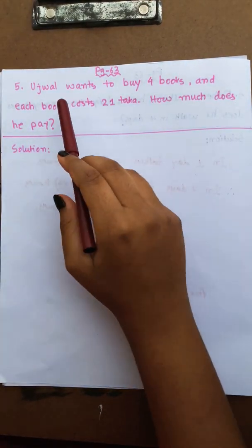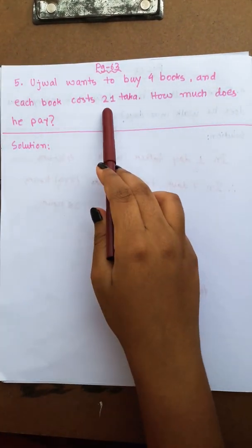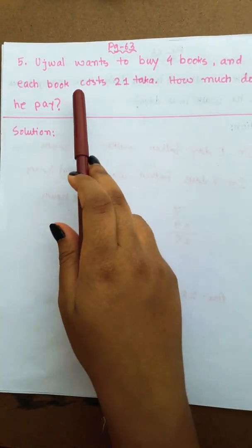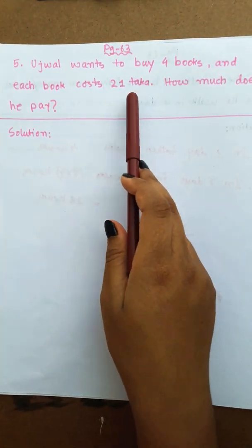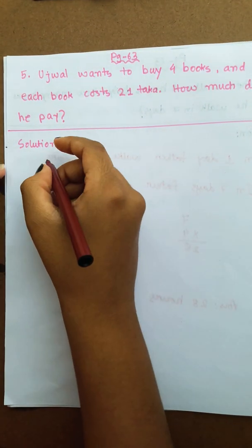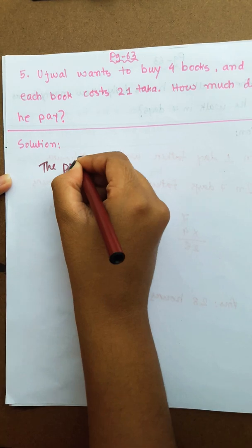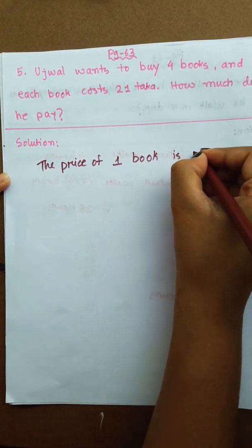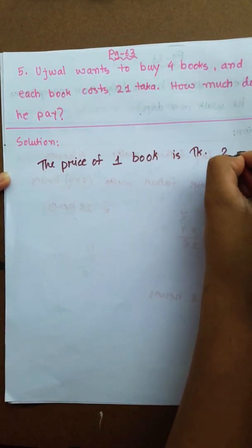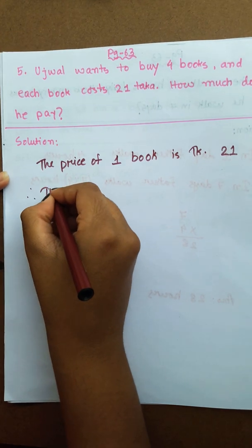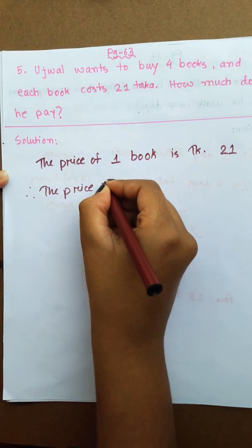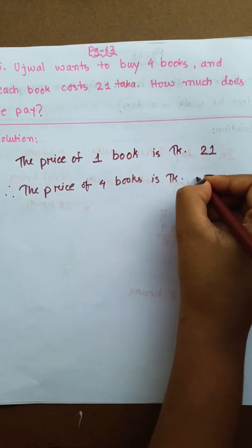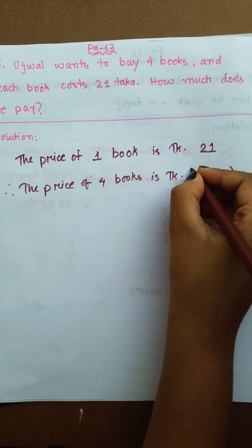Now, the next math. Ujjal wants to buy 4 books and each book costs 21 taka. How much does he pay? The price of 4 books is taka 21 into 4.